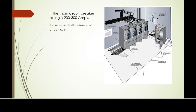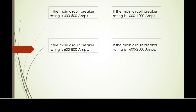As per ADDC electricity and wiring regulations 2020, appendix 8, there are certain minimum sizes for LV switch rooms based on their respective main circuit breaker amperes. For example, if the main circuit breaker rating is 200 to 300 amps, the room size shall be a minimum of 2 by 2 meters. Similarly, if the main circuit breaker rating is 400 to 500 amps, the LV switch room size shall be a minimum of 2.5 by 2 meters.